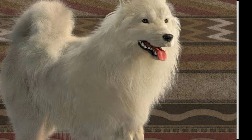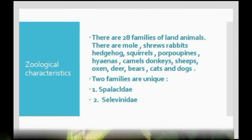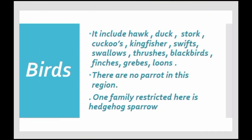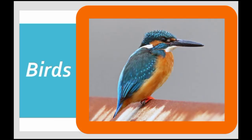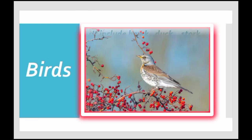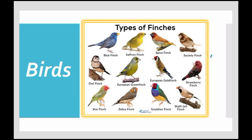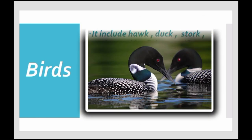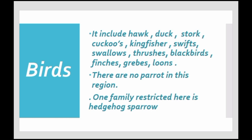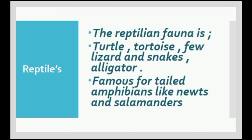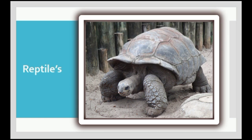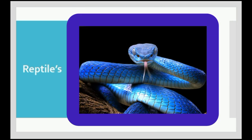Two families are unique: Spalacidae and Selenidae. For birds, the region includes hawks, ducks, storks, cuckoos, kingfishers, swifts, swallows, thrushes, blackbirds, finches, grosbeaks, and loons. There are no parrots in this region. One family restricted here is the hedge sparrow. The reptilian fauna includes turtles, tortoises, a few lizards, snakes, and alligators.